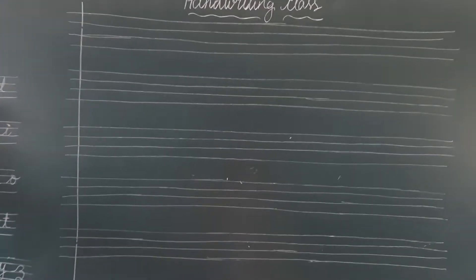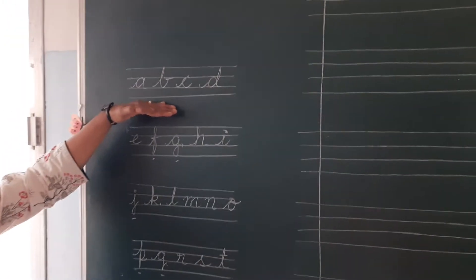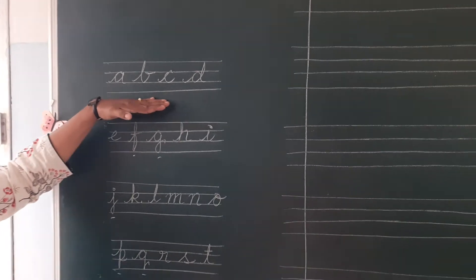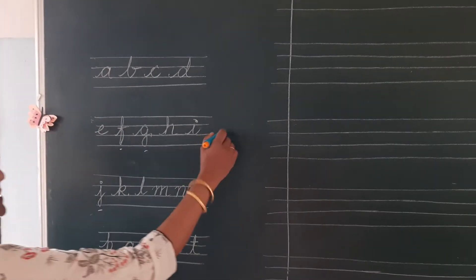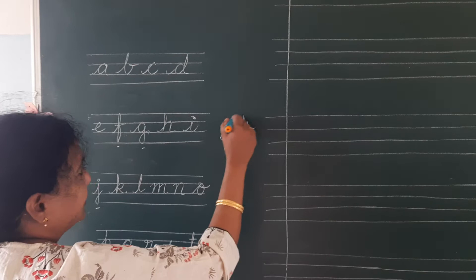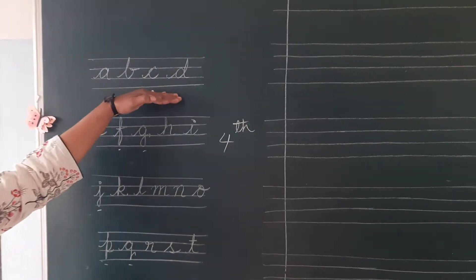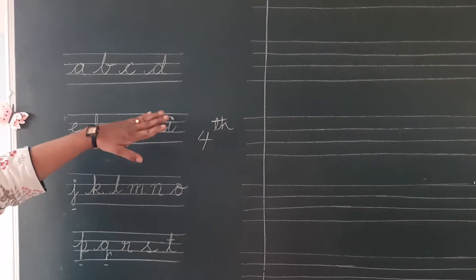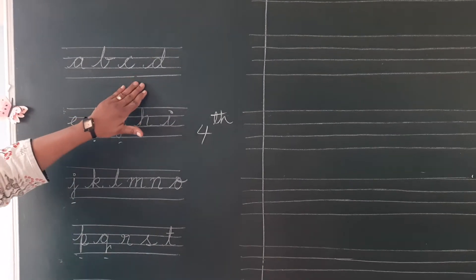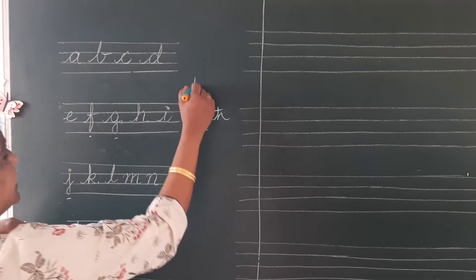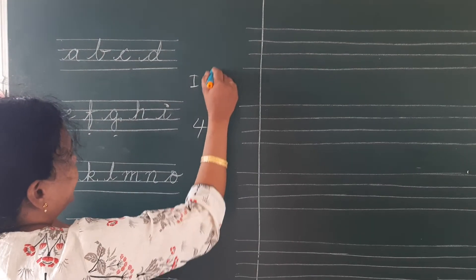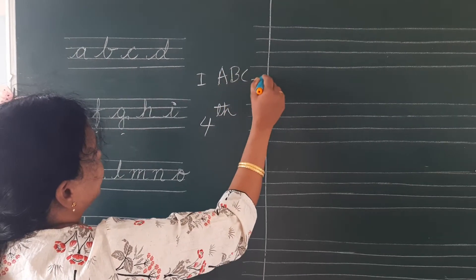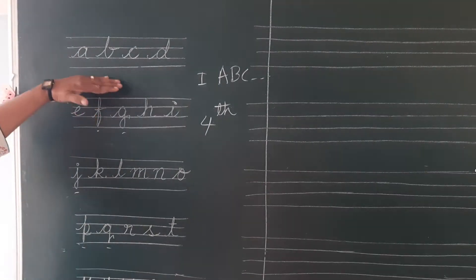Once go through these letters. These letters are called fourth letters. These we are using for our small letter writing in English, EVS, Maths, whatever subjects you are writing. What are the first letters I said? A, B, C and so on. Now, these letters.